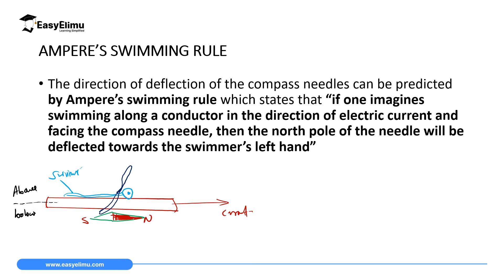So according to this rule, when this swimmer is swimming in the same direction with current, and there's a compass needle below the wire, the compass needle will deflect toward the swimmer's left hand. So it means below this wire, this compass needle will move in this direction, and then the south pole will be here. So when this needle is placed below, the needle points in the direction of the left hand of the swimmer.